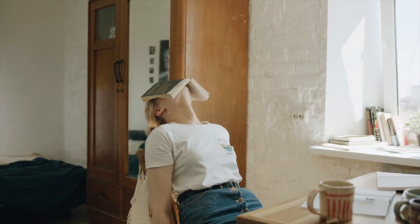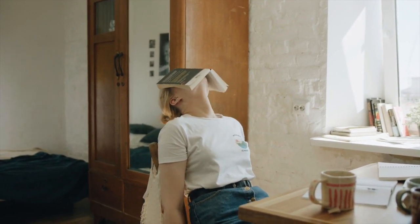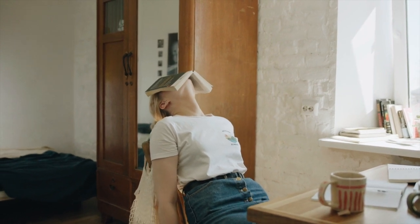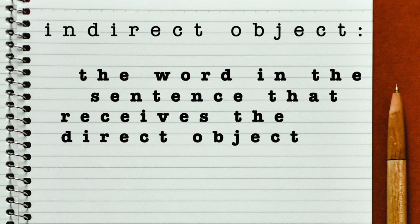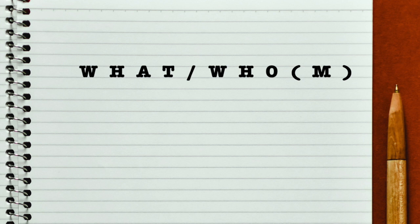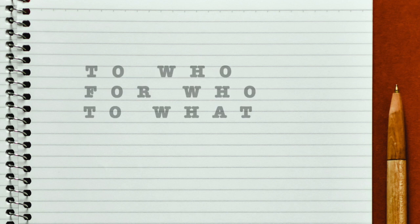Indirect objects can be kind of tricky, and we can't even talk about them before referencing direct objects first. Just a refresher: a direct object is a word that receives the action of the verb. There's probably a link around here somewhere if you want to check that video out, but back to indirect objects. The indirect object receives the direct object. While the direct object answers the question 'what' or 'who,' the indirect object answers 'to who,' 'for who,' or 'to what.'